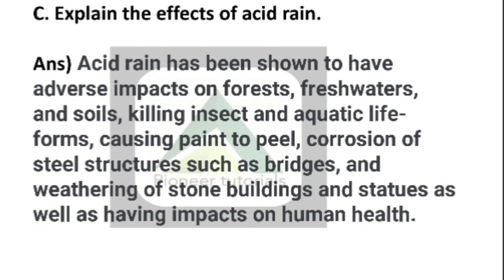Question 3C: Explain the effects of acid rain. Answer: acid rain has been shown to have adverse impact on forests, fresh waters and soil, killing insects and aquatic life forms, causing paint to peel, corrosion of steel structures such as buildings, and weathering of stone buildings and statues, as well as having an impact on human health. In short, all biotic and abiotic components can be affected due to acid rain.